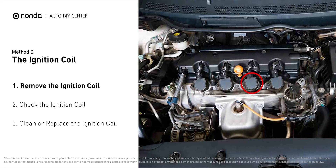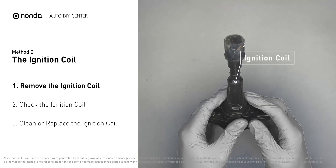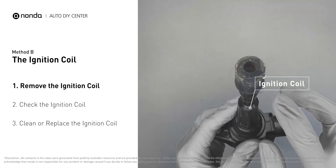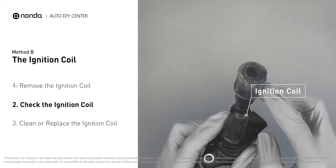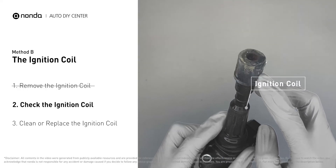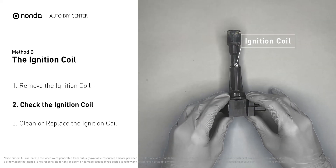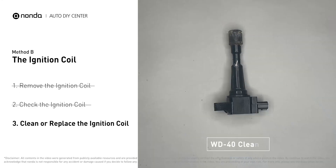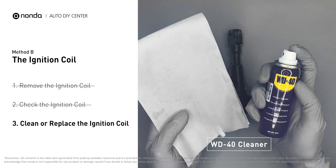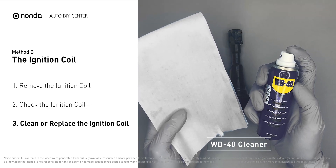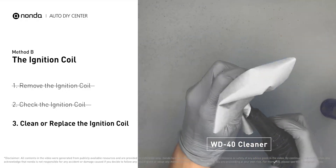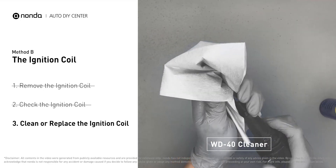Ignition coils are usually installed directly at the cylinder head above the spark plug. First, carefully remove the ignition coil from the engine. Check to see if the ignition coil is either stained or damaged. If the ignition coil is covered with engine oil or stains, simply clean it with a WD-40 cleaner.